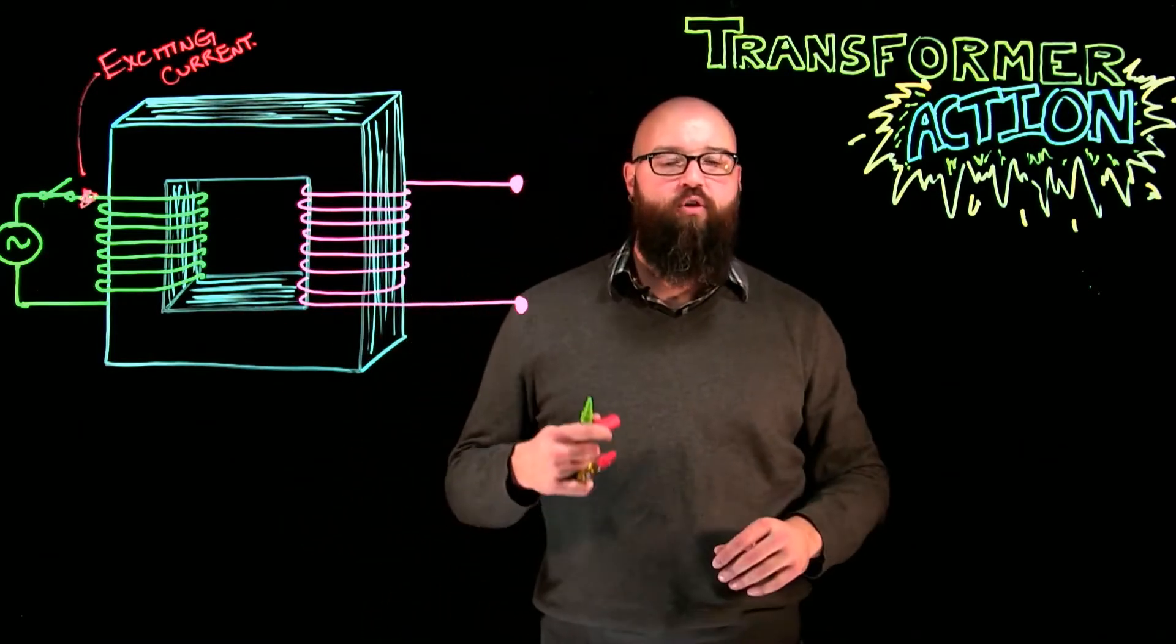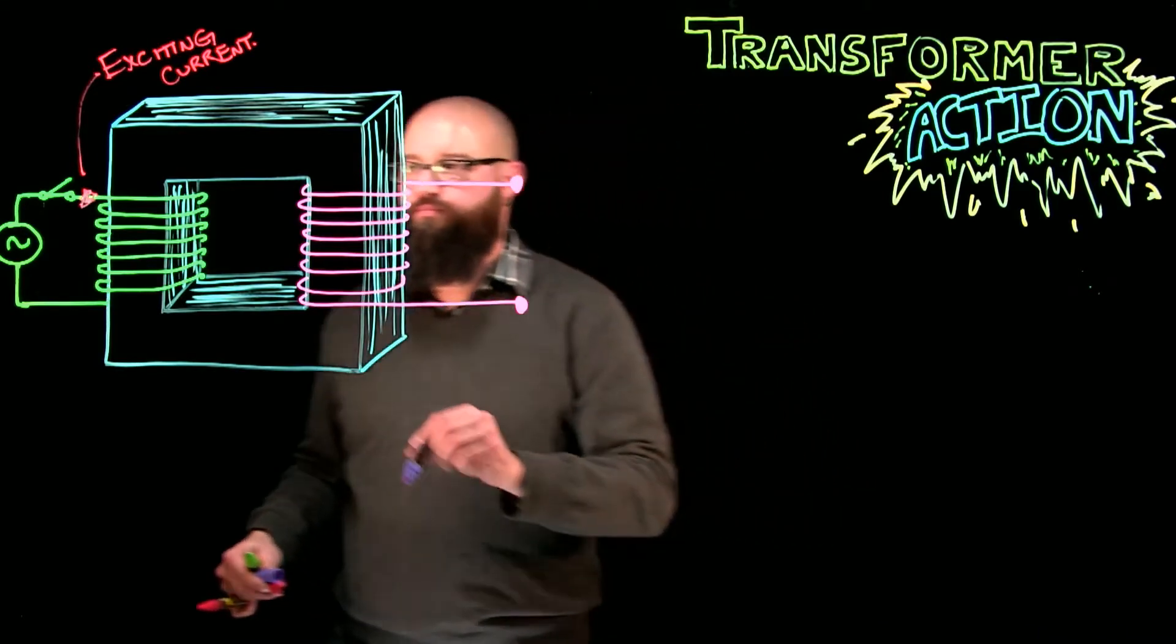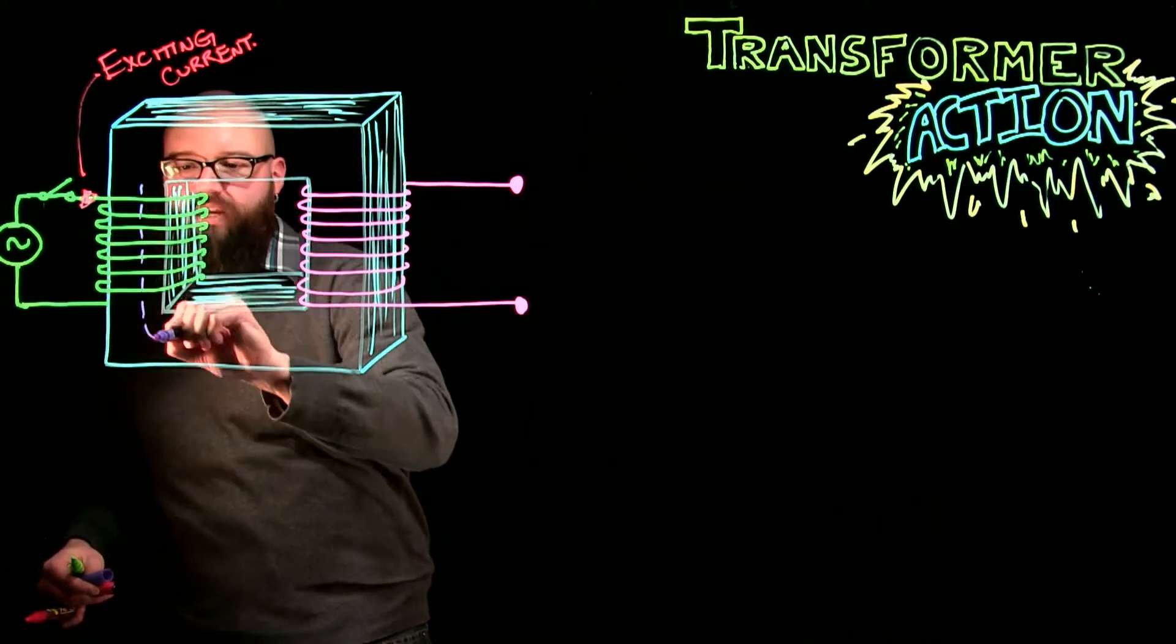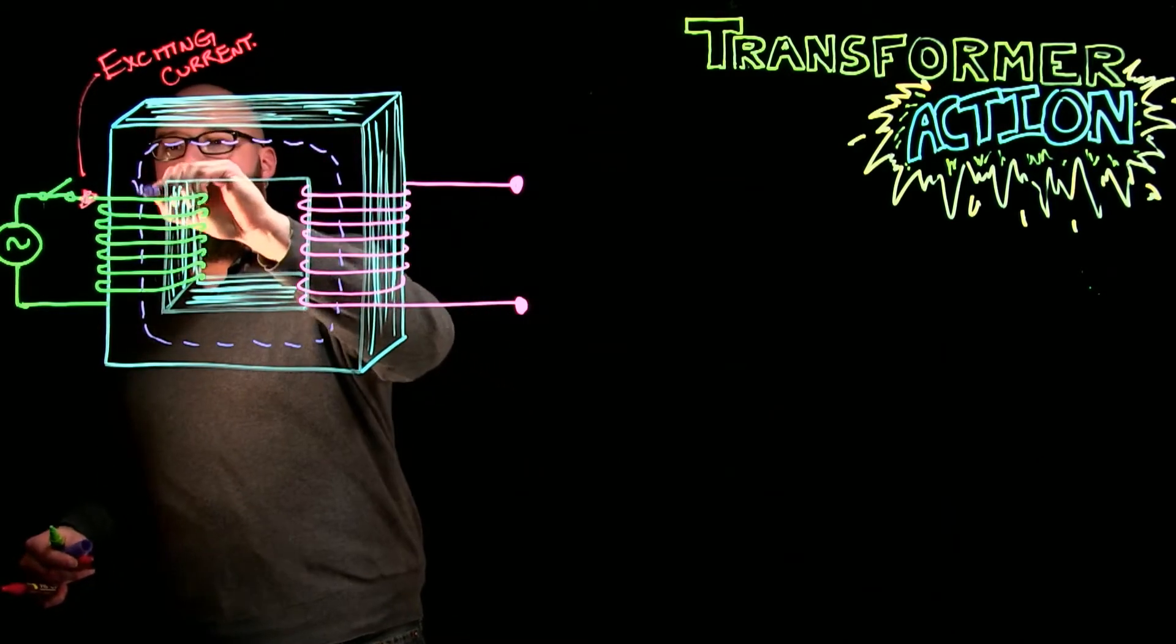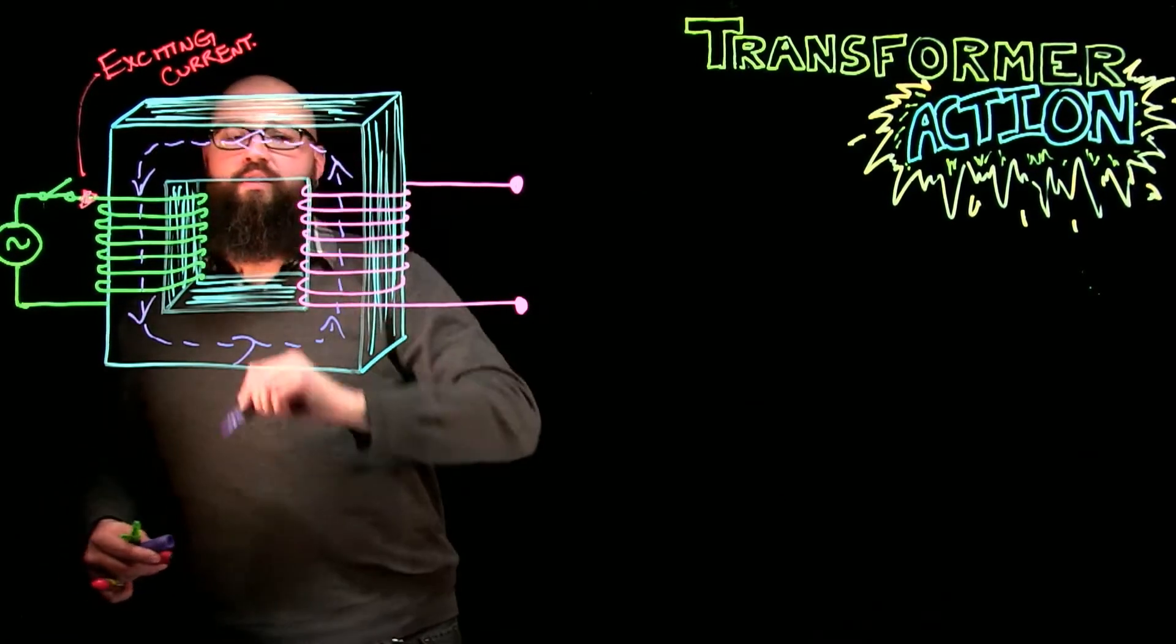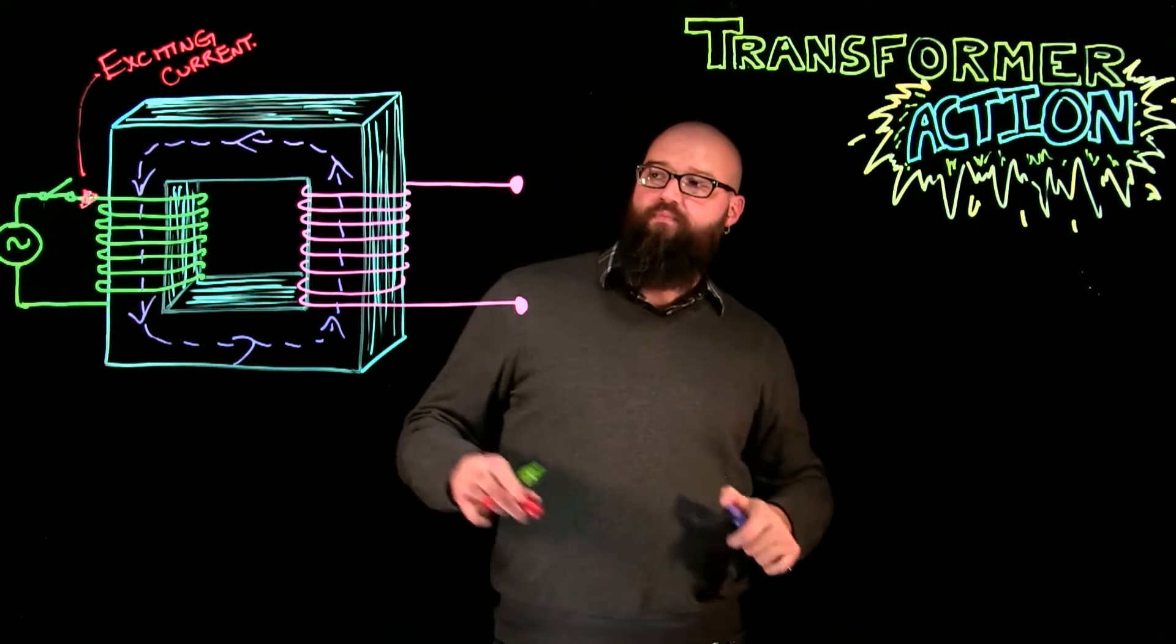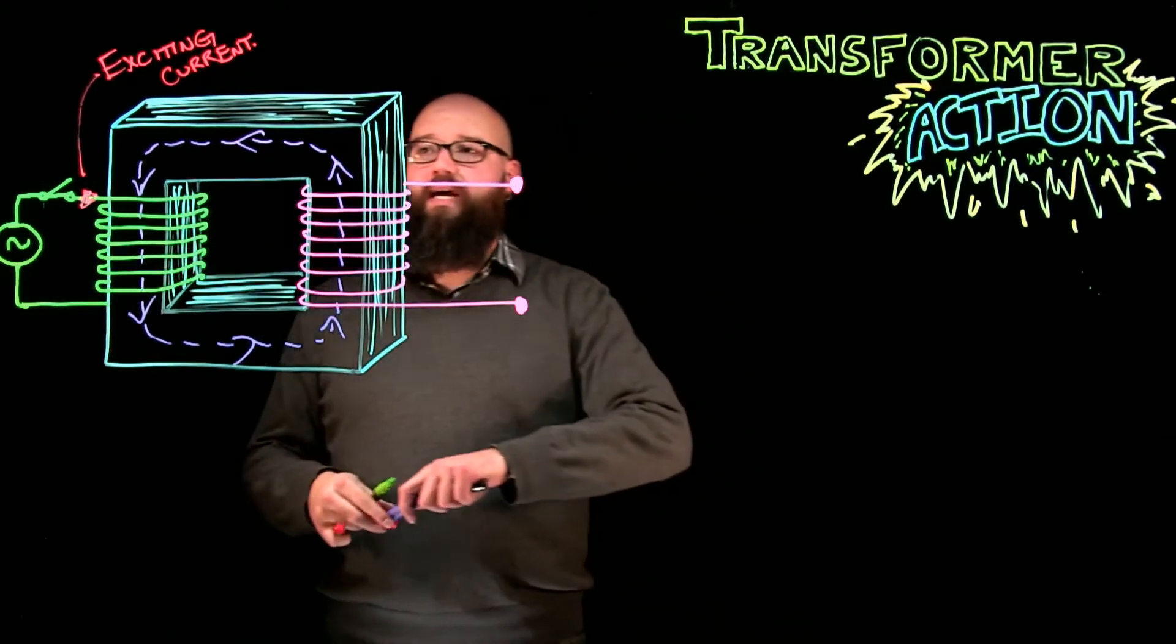those magnetic lines of force are going to aid with each other, and they're going to create a magnetic field, which will be induced into the core of this transformer. We are going to call that exciting flux. And it's going to be in one direction. Sorry about the squeaks.